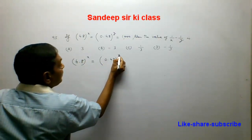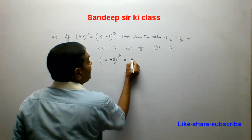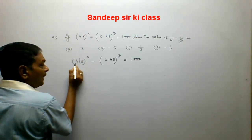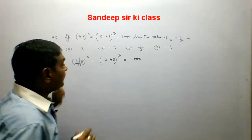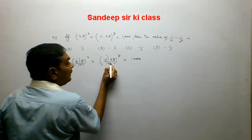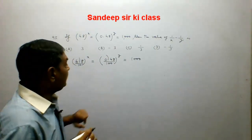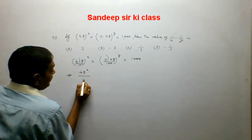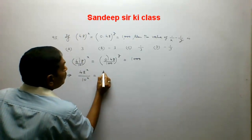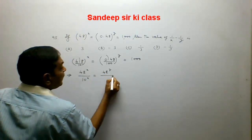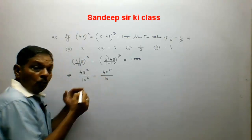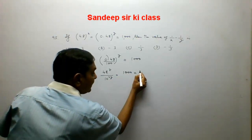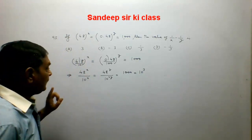If I remove the decimal point from 4.8, it gives 10 in the denominator; if I remove the point from 0.48, it gives 100 in the denominator. This gives us 48 raised to the power x upon 10 to the power x, equal to 48 raised to the power y upon 10 to the power 2y — since 100 is 10 squared — and this equals 1000, which is 10 to the power 3.